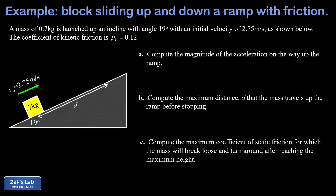In part A, we're going to find the acceleration on the way up the ramp. In part B, we get the maximum sliding distance up the ramp. In part C, we find the maximum static friction coefficient so that the block will still break loose and turn around and come back down the ramp. In part D, we get the acceleration on the way down the ramp. And finally in part E, we get the total time for the block to slide all the way up, turn around, and come back to where it started.